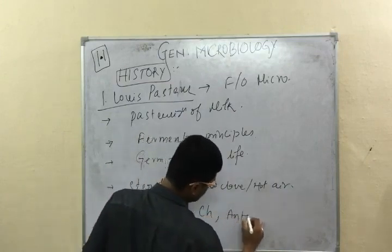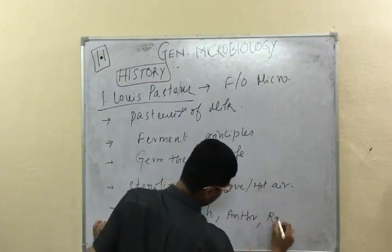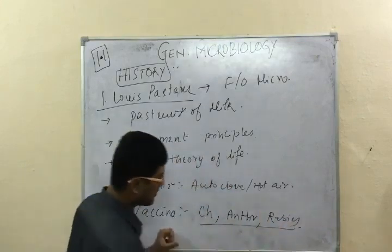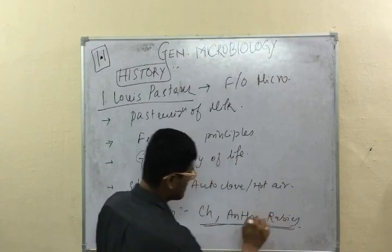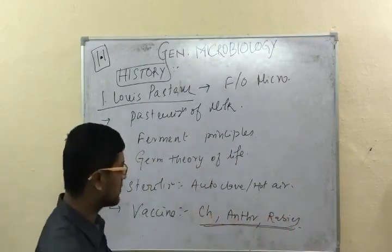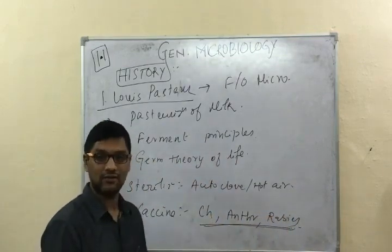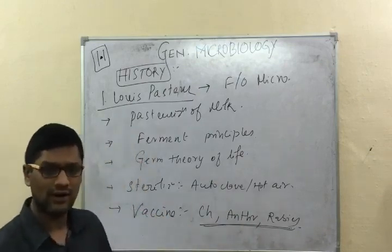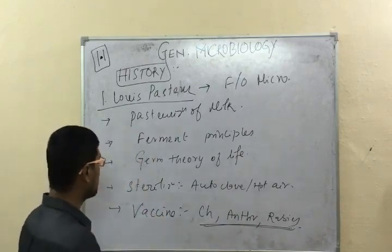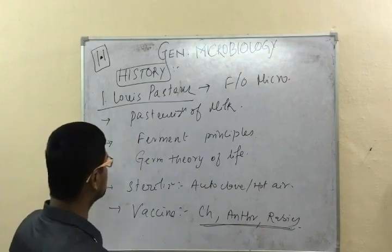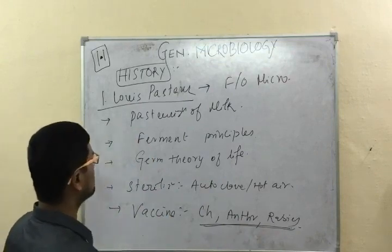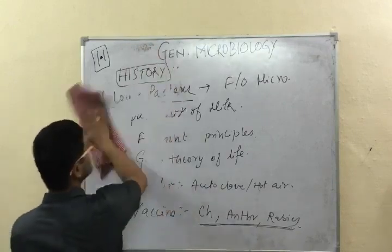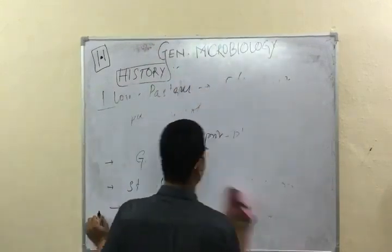Louis Pasteur discovered various vaccines like the cholera vaccine, anthrax vaccine, and rabies vaccine. These were not the vaccines in use today, but the first stage of vaccines for cholera, anthrax, and rabies were discovered by Louis Pasteur. Of course, now those are much modified and advanced vaccines are used.